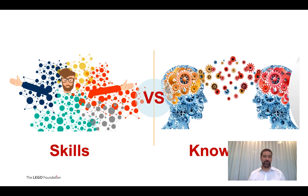Ultimately, we really need to think a little bit about school and what we're trying to do in school. Within school, we're trying to make sure that we give children knowledge — and knowledge is still important in schools — but we're also trying to make sure that they've got the skills to help them thrive in the 21st century and beyond.